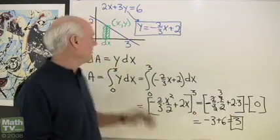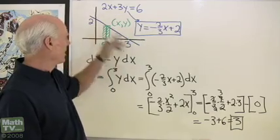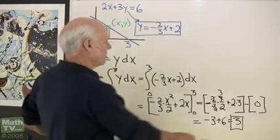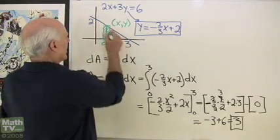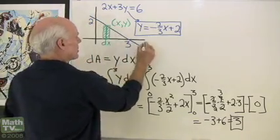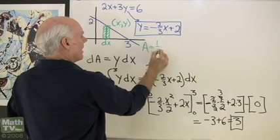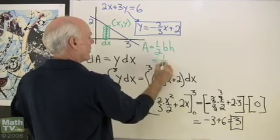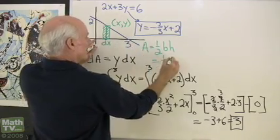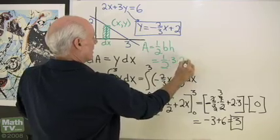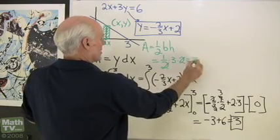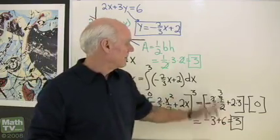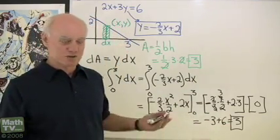So the area under that curve 2x plus 3y equals 6, between 0 and 3, turns out to be 3. But we already knew that — the area under this curve is just one half the base times the height: one half times base 3 times height 2, those divide out, and I get 3. So the area from integration matches the area from regular algebra.